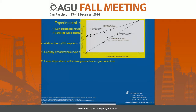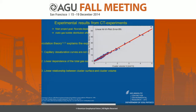For mass transfer calculations you need the gas-water interface, and here we found a strong linear behavior. Looking at other results from literature — especially Landry et al. — we found the same strong linear relationship. We analyzed individual cluster surface against cluster volume and found a clear linear relationship at the pore scale, which gives this macro-scale linear dependence of total gas surface versus gas saturation.